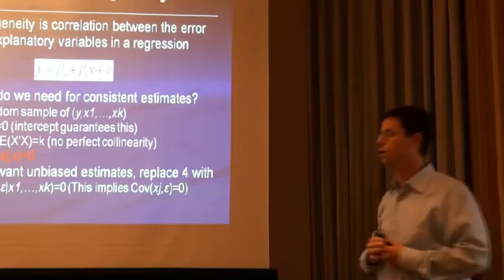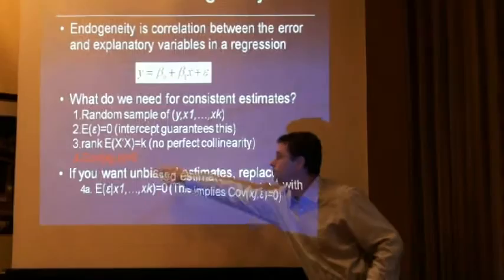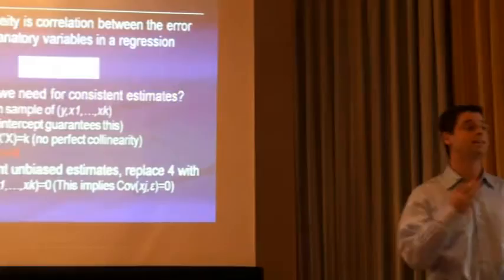If you want to think in terms of unbiased, you just replace the zero covariance assumption with the zero conditional mean assumption — that implies that. But we're just going to think in terms of correlation; it's a little bit easier for people as opposed to conditional mean independence. That's what endogeneity is.